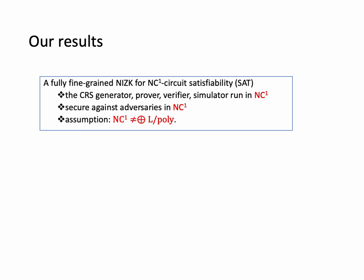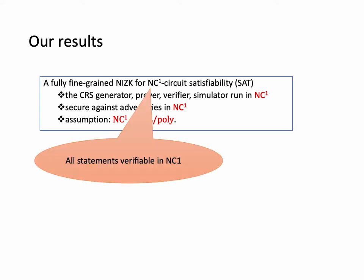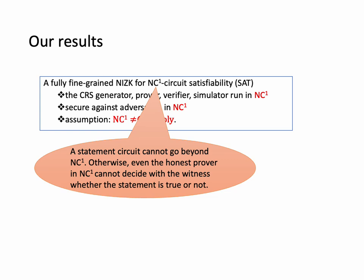In this work, we propose the first fully fine-grained NIZK for NC1 circuit satisfiability. In our construction, all the CRS generators, the prover, the verifier, and the simulator run in NC1, and the construction is secure against all adversaries in NC1. The assumption is the same as before: NC1 is not equal to Parity-L/poly. Our NIZK supports all statements verifiable in NC1. We note that a statement circuit cannot go beyond NC1; otherwise, even the honest prover in NC1 cannot decide with the witness whether the statement is true.